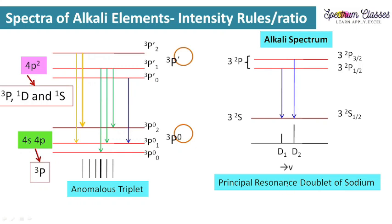Here I have written resonance. What does this resonance mean? This is the principal series — principal series means P to S transitions occurring. So this is principal series for the sodium atom. If the excited electron is in the 4S state and from there we are having S to P transitions, then that is called the sharp transition series for the sodium atom.